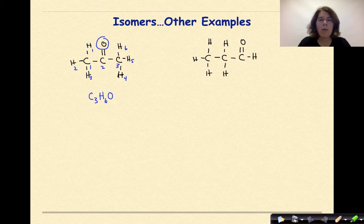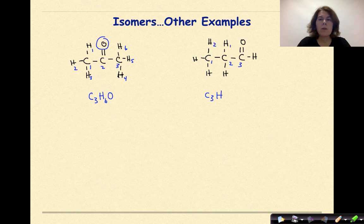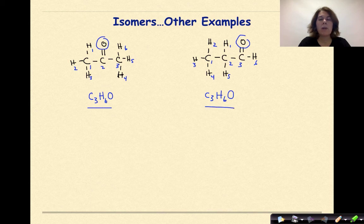And let's do the same thing for the molecule over on the right. One, two, three carbons. So C3. Number of hydrogens. One, two, three, four, five, six. Six hydrogens. And finally, that one oxygen right here. So are these isomers of each other? Absolutely they are. They both have the same molecular formula. Now, they're very different structures. The one on the left is a ketone while the one on the right is an aldehyde.